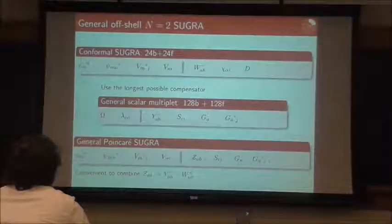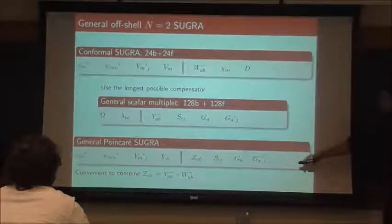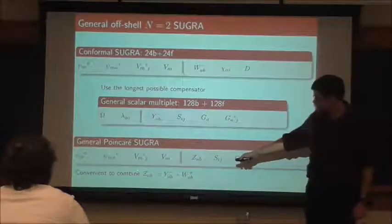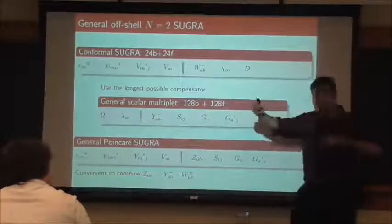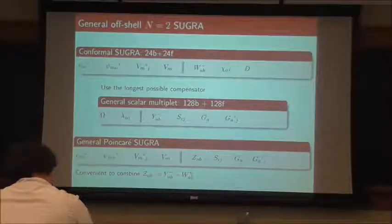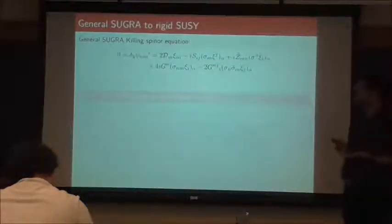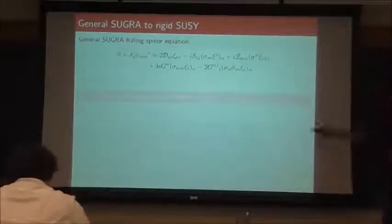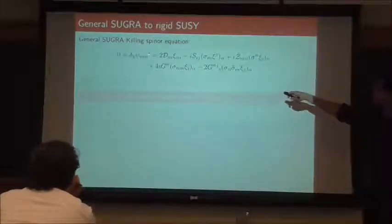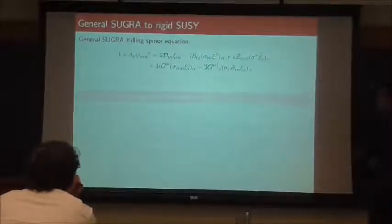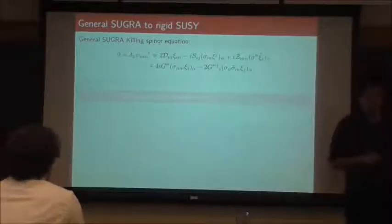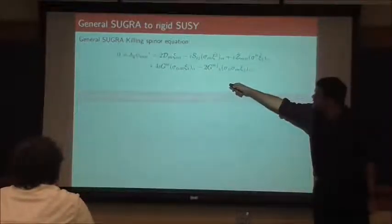It's all about solving the Killing-spinor equation. Here it is — I don't expect you to write it down or think about it deeply. The only point is that all of these objects are appearing. You can also convince yourself that essentially all possible structures you could have on the right-hand side of this Killing-spinor equation are appearing, up to redefinitions of the R-symmetry connections inside the covariant derivative.